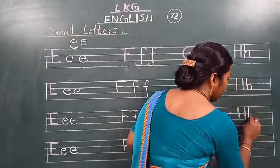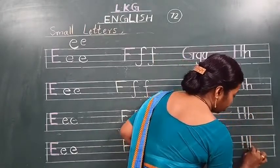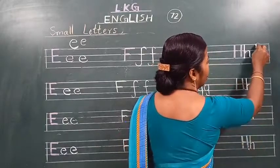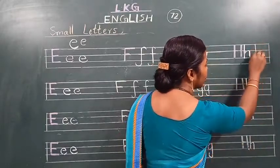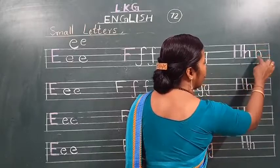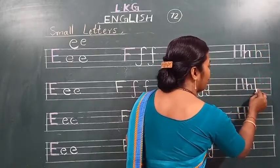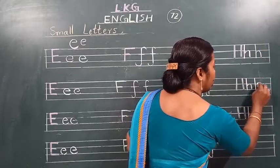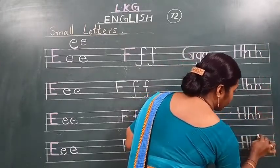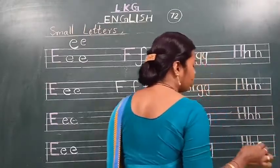Okay students — this is H. Dekho, this is H. Or likhne ke time dhyan rakhna. Dekho, first line se start hota hai, or third line mein stop karna hai. Okay? Standing line, curve. Okay, this is H. H for hat. Aagaya sabko?